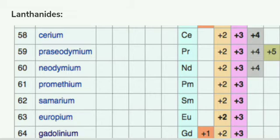When we go through elements like cerium, praseodymium, and neodymium, you can see that the plus 4 oxidation state is exhibited by these three elements. Plus 5 oxidation state is exhibited by praseodymium, and plus 1 oxidation state is exhibited by gadolinium.